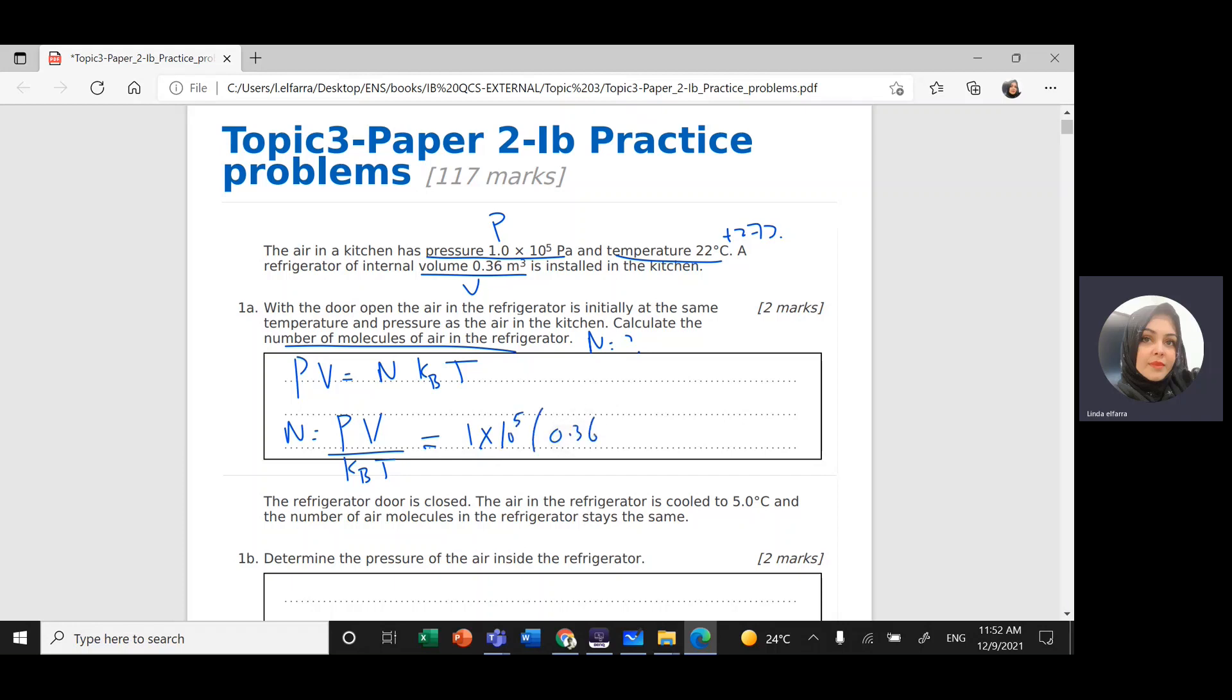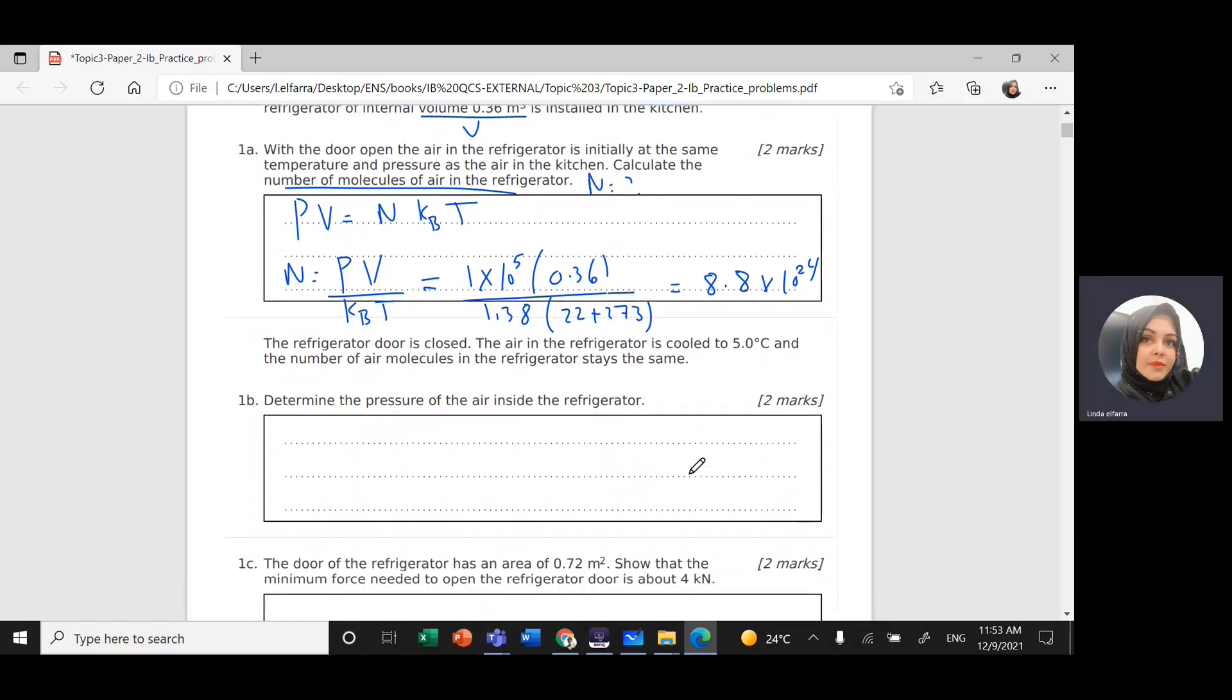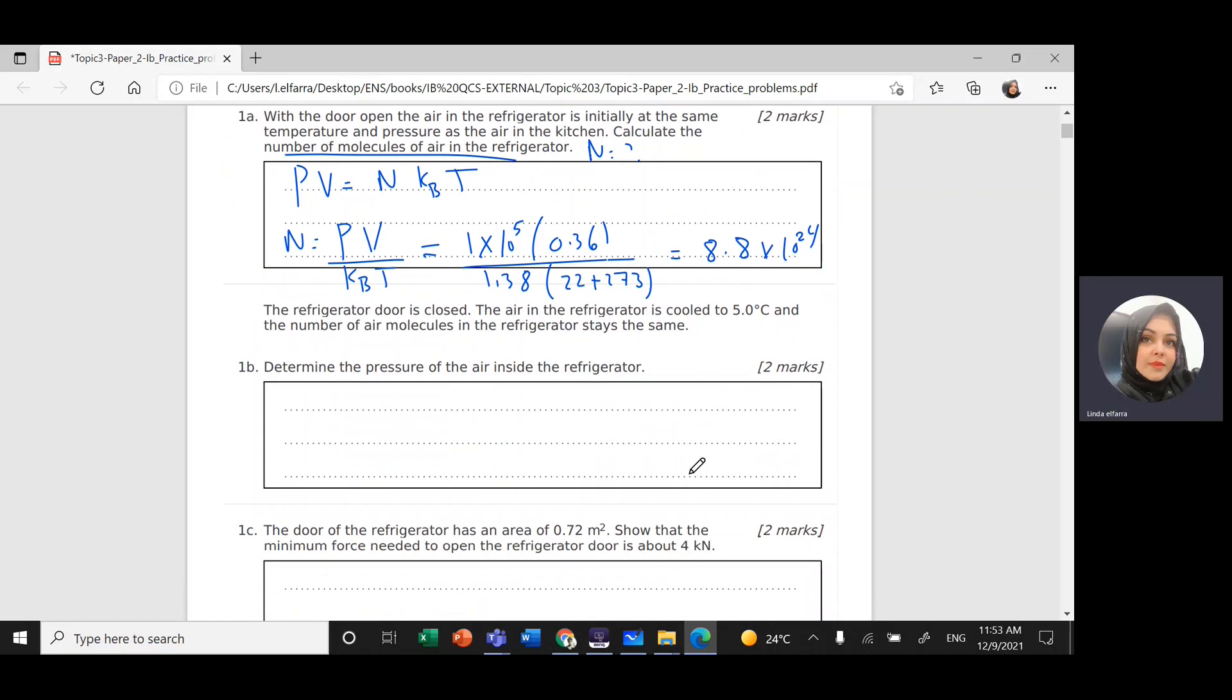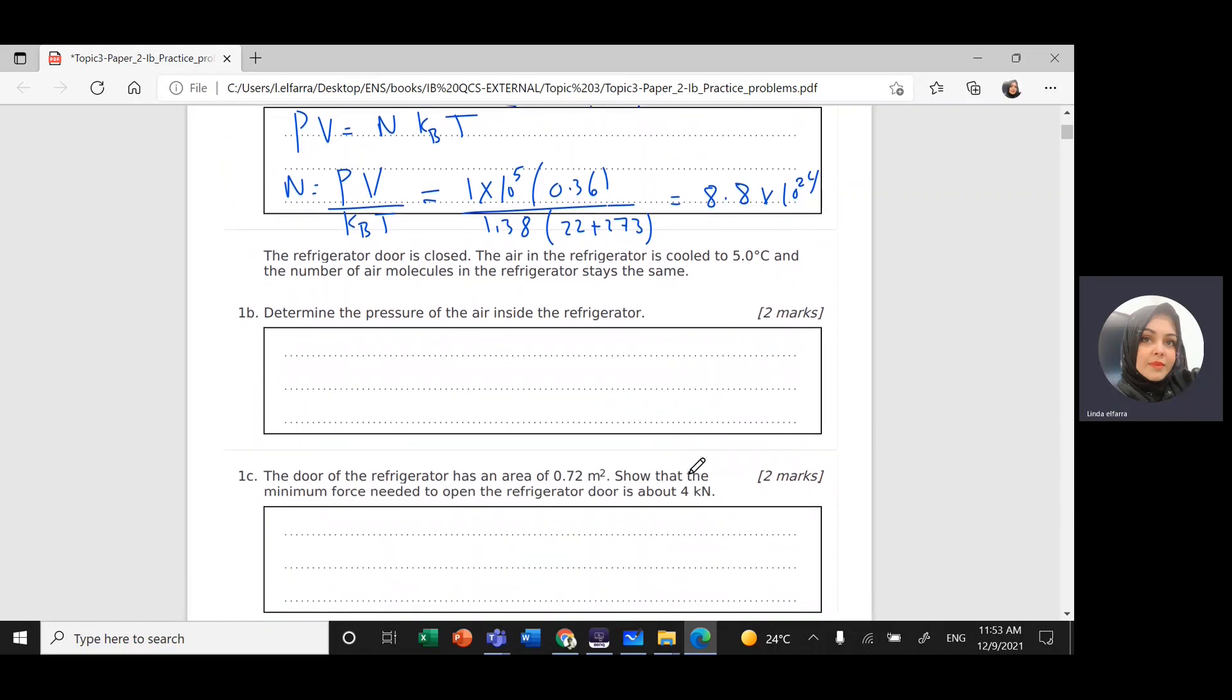P is 1 times 10 to the power 5, volume is 1.36, divided by Boltzmann constant 1.38, and temperature is 22 plus 273. This gives us 8.8 times 10 to the power 24 atoms.